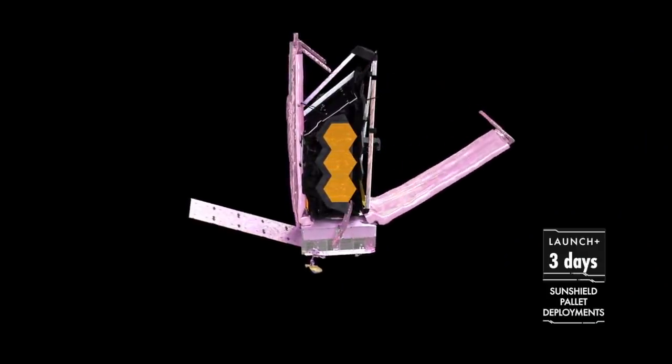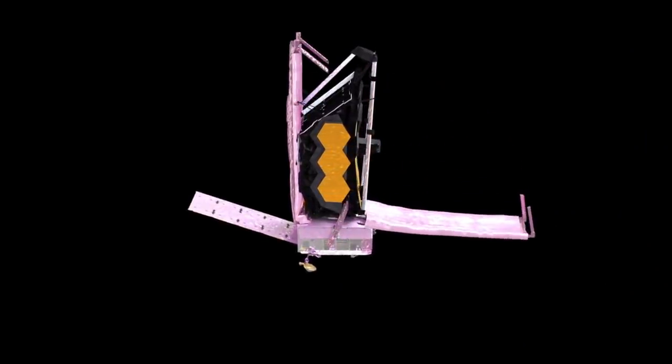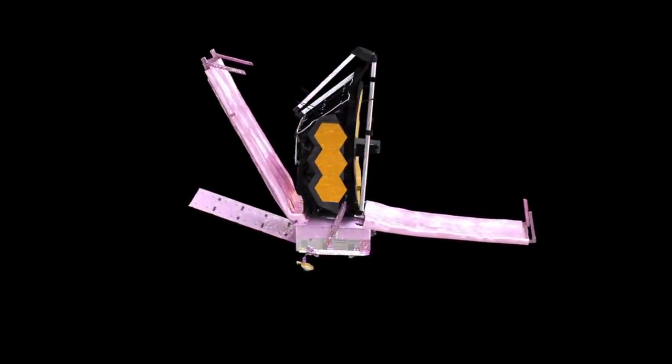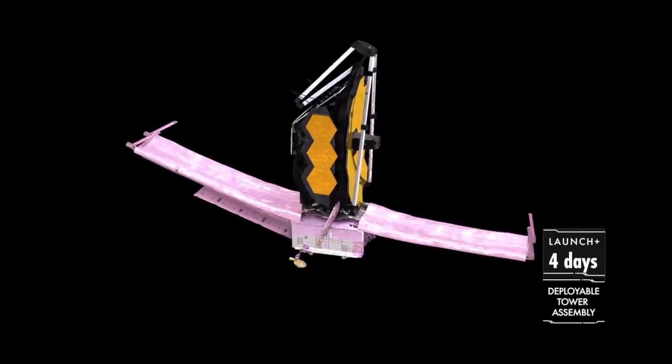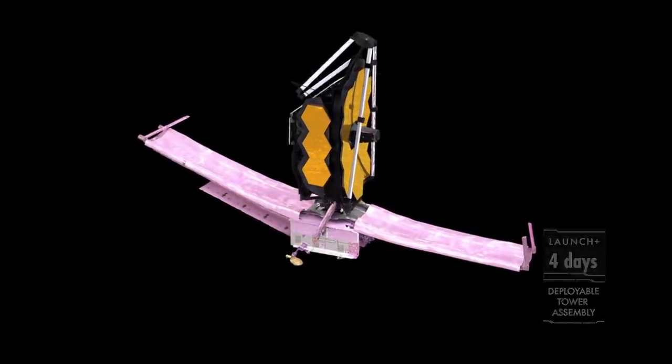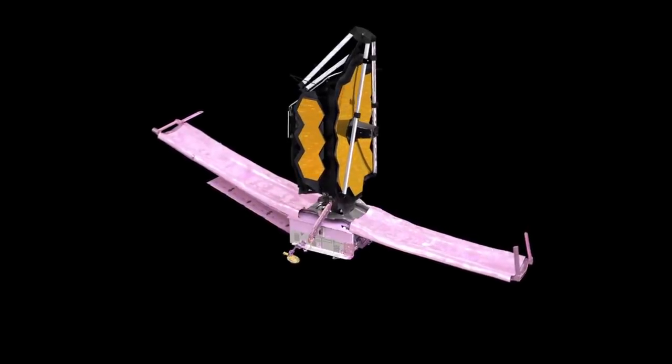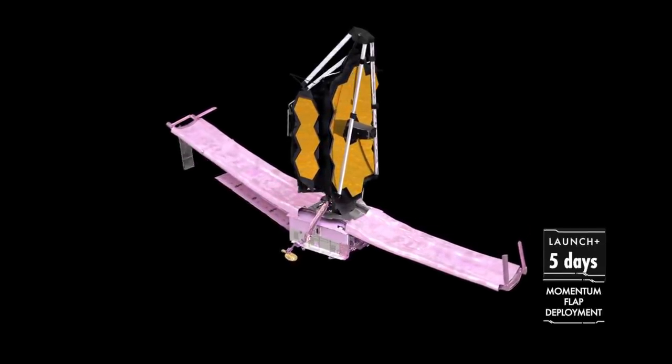This multiple day process first involved deploying the sunshield, which went smoothly other than some sensors on its protective cover not reading that the cover was unfurled, when other instruments showed that it was. This did not cause any problems, however.